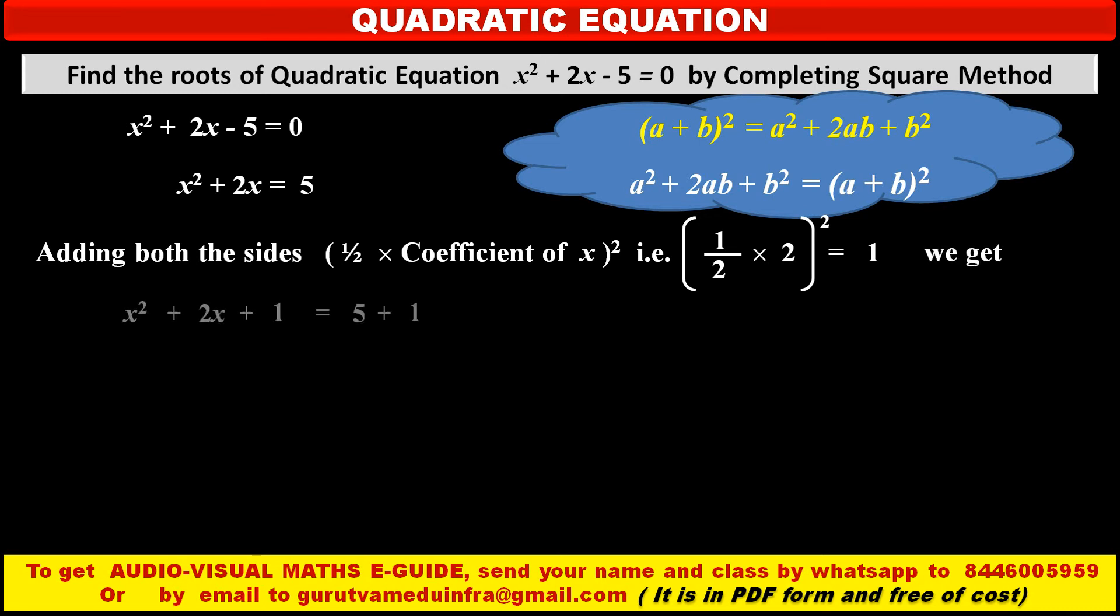See, in the left hand side, x² + 2x + 1 is equal to, in the right hand side, 5 + 1. So by applying above formula identity in left hand side, we get (x + 1)². Means x² + 2x + 1 is an expansion of (x + 1)² is equal to 6.